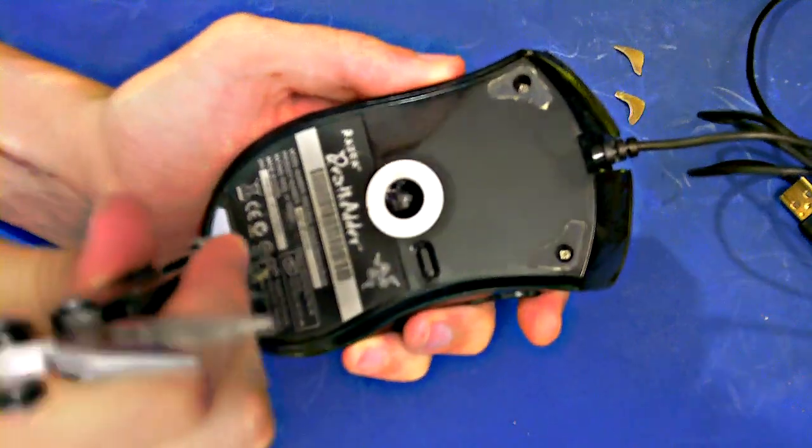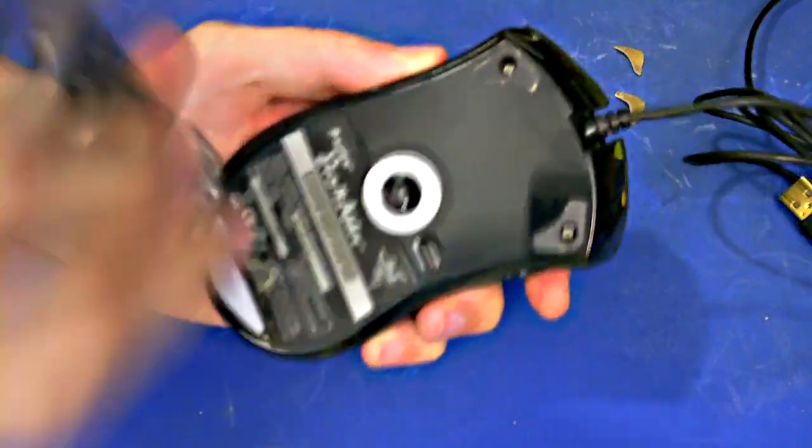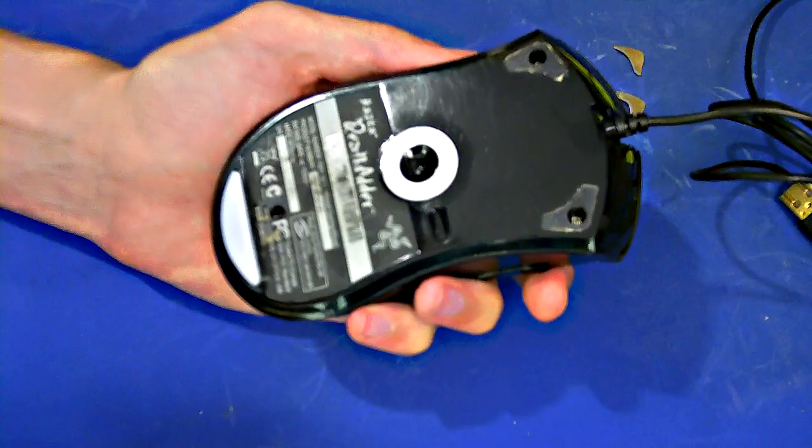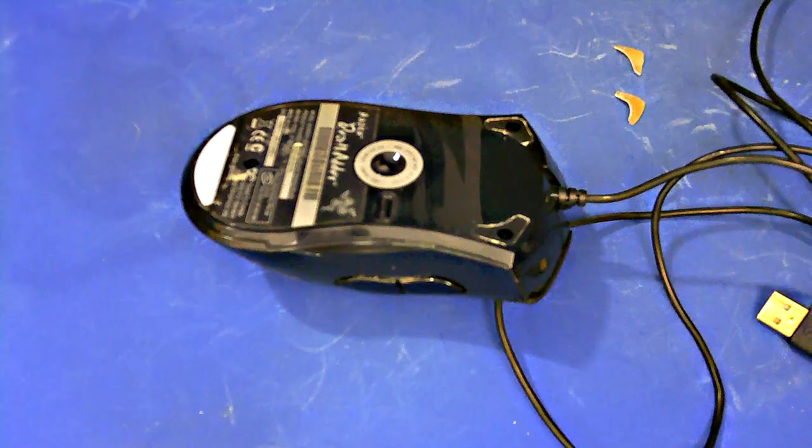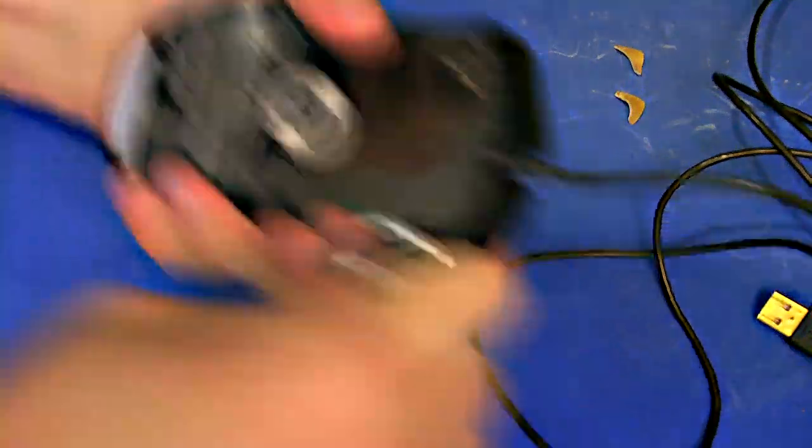And there is also a screw underneath the sticker here. So as you go through, you're going to have to cut a little hole to get to that screw. So those are the only three screws holding it together at the bottom.